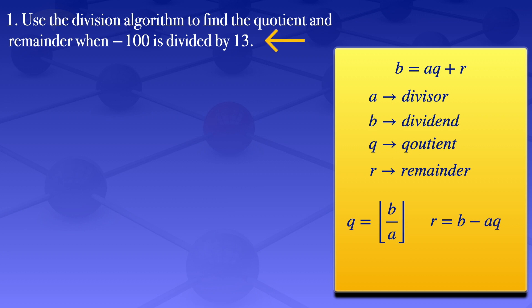For the first question, our divisor is 13 and our dividend is -100. Using this formula for the quotient, our quotient in this case will be the floor value of -100 divided by 13, and that floor value will give us -8. So we have found our q.